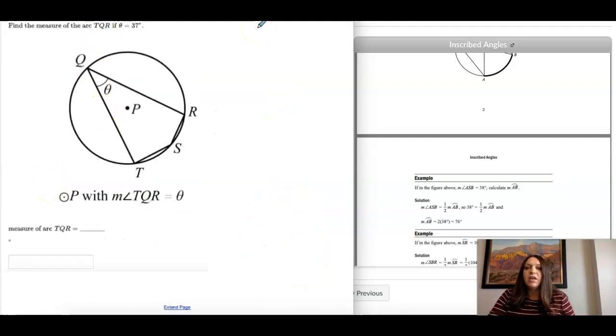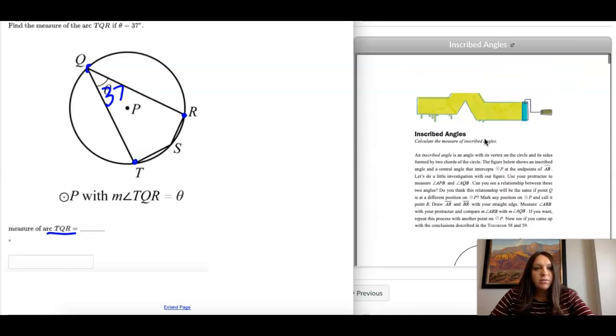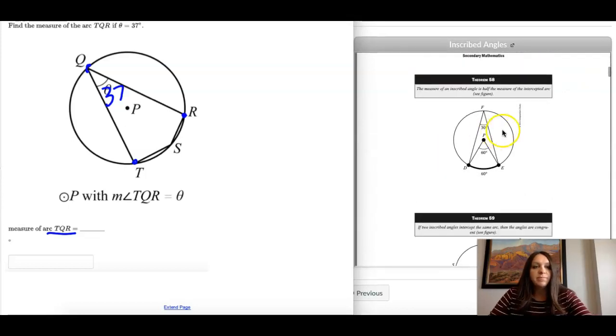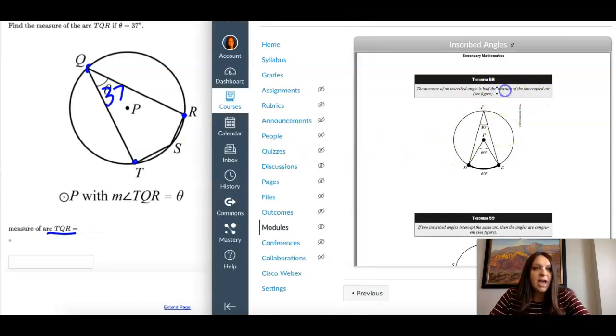Okay, find the measure of the arc if theta is 37. So now, measure of arc TQR. So T to Q to R, that's our arc that we're looking at. So this goes back to what we saw at the beginning.